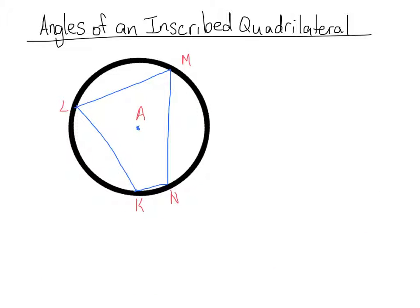Our final theorem tells us that if we have a quadrilateral inscribed in a circle, the opposite angles are always supplementary — they always add up to 180 degrees. For example, if one angle is 70 degrees, the opposite angle would be 110 degrees. Similarly, if one angle is 80 degrees, the opposite is 100 degrees. This is the case for any type of quadrilateral, as long as it's a four-sided figure inscribed in a circle.